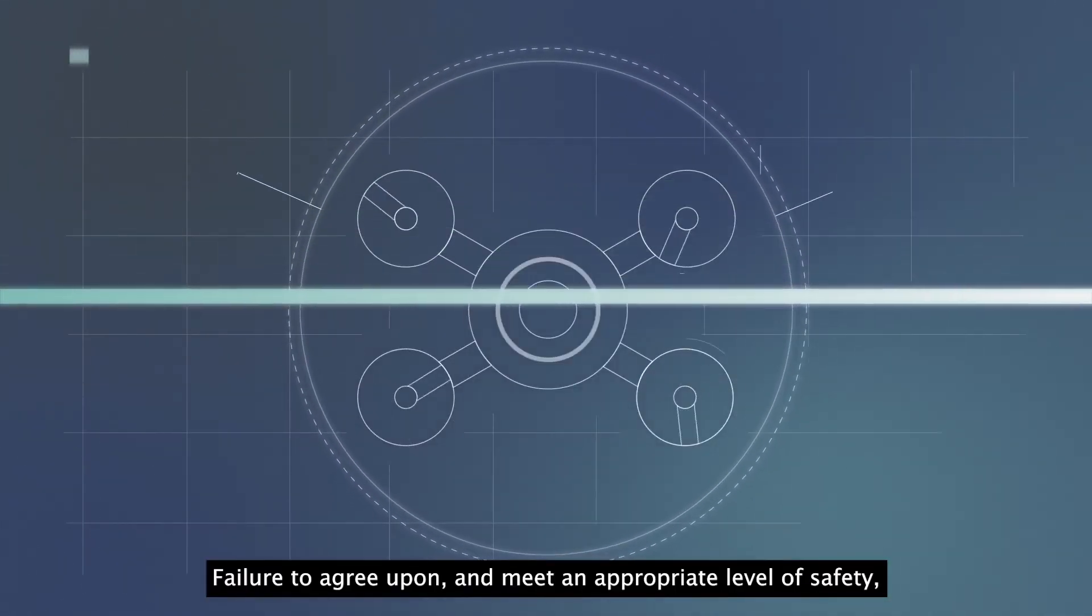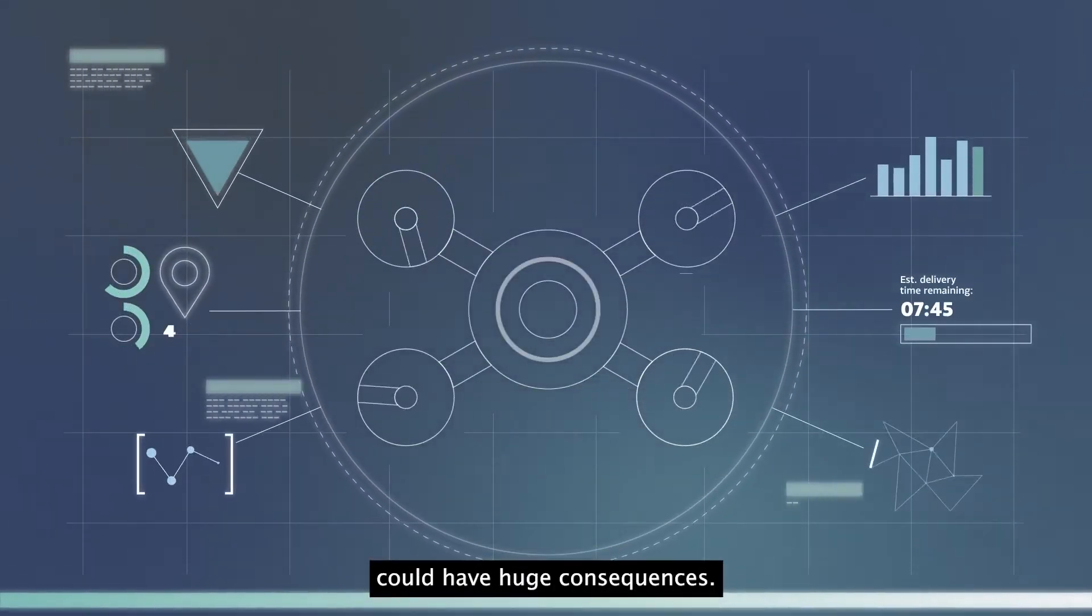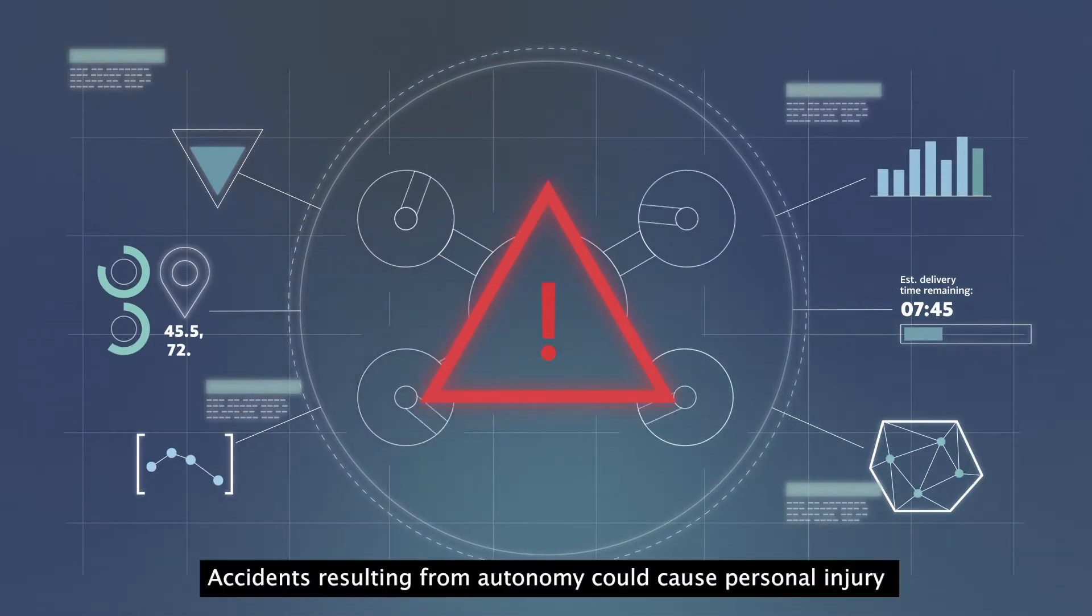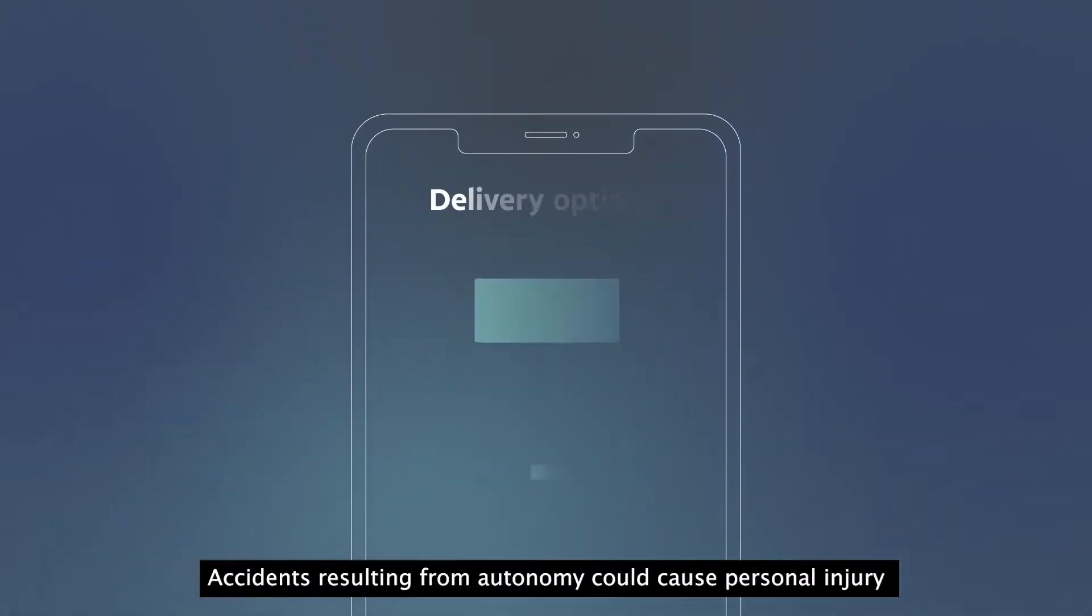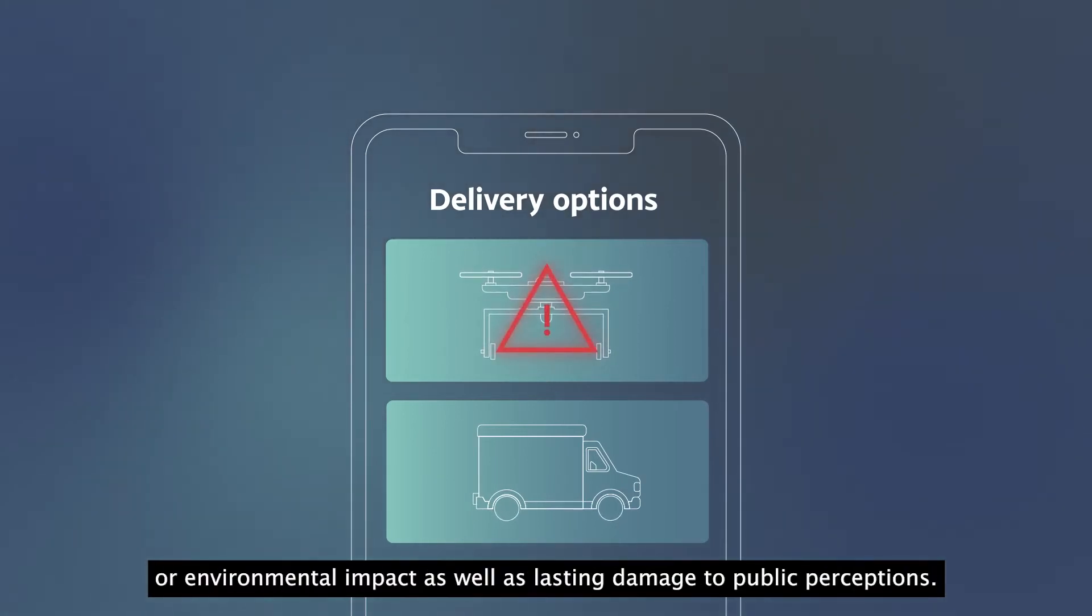Failure to agree upon and meet an appropriate level of safety could have huge consequences. Accidents resulting from autonomy could cause personal injury or environmental impact, as well as lasting damage to public perceptions.